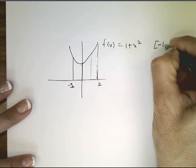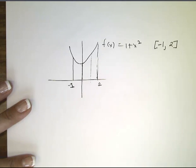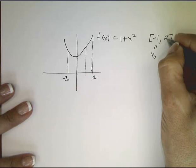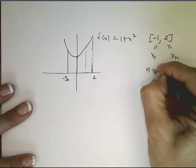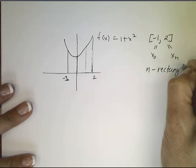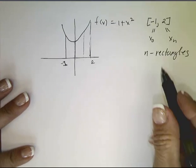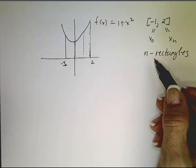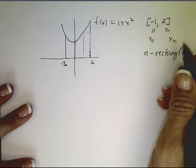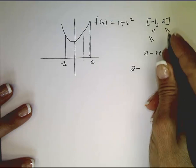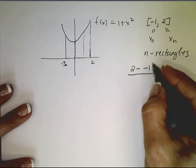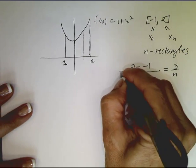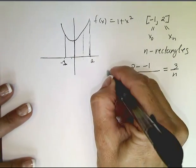Our interval is from -1 to 2. The left endpoint is x sub 0 and the right endpoint is x sub n, when breaking this up into n rectangles. The width of each rectangle — we take the length of the interval, 2 minus (-1), and divide by the number of rectangles. So in this case, that's 3 over n. That's the change from one x to the next, and we call that delta x.